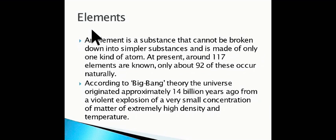What do you mean by elements? An element is a substance that cannot be broken down into simpler substances and is made of only one kind of atom. At present, around 117 elements are known, and out of them, only about 92 of these occur naturally.